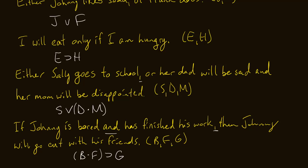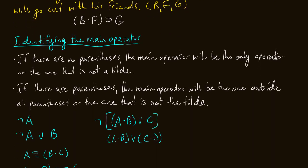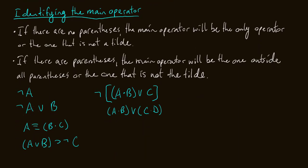Now we're going to talk about how to actually identify the main operator. If there are no parentheses — which would only be the case if we have one or two components — the main operator will be the only operator, or the one that is not a tilde. If there are parentheses, the main operator will be the one outside all parentheses, or the one that is not the tilde. Let's look at the examples using this definition.